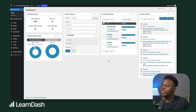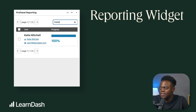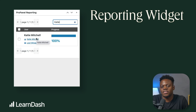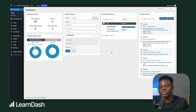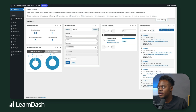Then we have the ProPanel reporting widget, which will display any information associated with the filters that have been selected. So if I want to find information on Katie and narrow it down, I can type her name in, and information on Katie is produced inside the reporting widget — really powerful if you want to dynamically find users and find information based on their interaction with your LearnDash courses. Remember, you can toggle the visibility of these widgets by heading over to screen options and clicking or de-clicking any of the items found in the options.